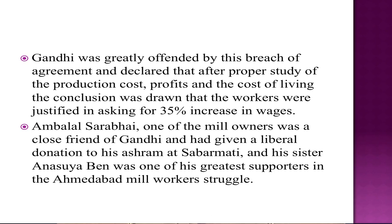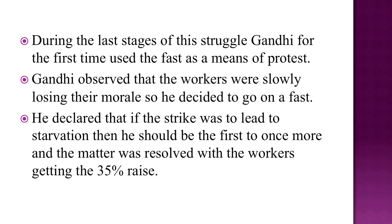Ambalal Sarabhai, one of the mill owners, was a close friend of Gandhi and had given a liberal donation to his ashram at Sabarmati, and his sister Ansuya Ben was one of Gandhi's greatest supporters in the Ahmedabad mill workers' struggle. During the last stages of this struggle, Gandhi for the first time used the fast as a means of protest. He observed that the workers were slowly losing their morale, so he declared that if the strike was to lead to starvation, he should be the first to do so. The matter was firmly resolved with the workers getting a 35 percent raise.